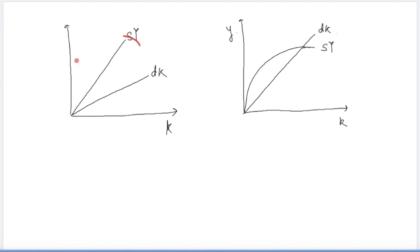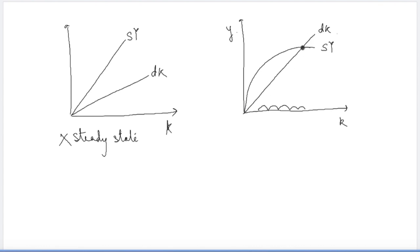The key difference between the Solow model and the AK model is that in the AK model you will never have a steady state of capital — the steady state is missing. The reason is that the rate of change does not decrease with an increase in capital, which was happening in the Solow model. In the Solow model, the net addition to output was decreasing with each increment in capital, and since depreciation was increasing at a constant rate, we reached a steady state stock of capital where savings exactly equals depreciation.